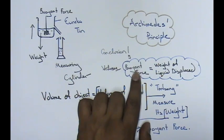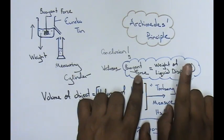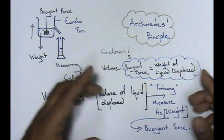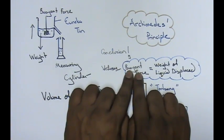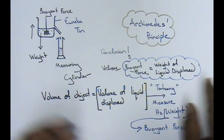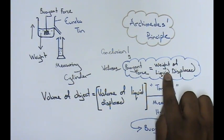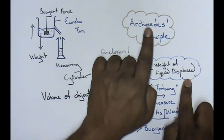Buoyant force equals the weight of liquid displaced. So technically, if you want your buoyant force to be higher, you need to displace more liquid. That's why submarines and ships are built to displace a lot of liquid so that the buoyant force is high and they can float. This is your conclusion to explain Archimedes principle.